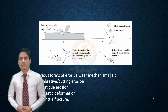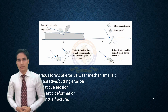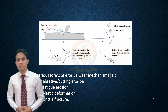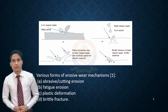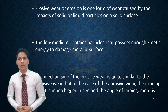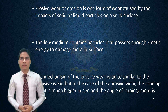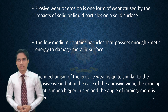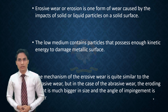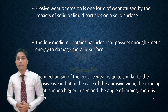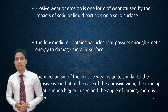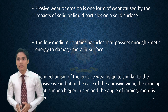This image in the slide shows various forms of erosion. Erosion is one form of wear caused by the impacts of solid or liquid particles on a solid surface. The flow medium contains particles that carry enough kinetic energy to damage the matrix surface. The mechanism of erosive wear is quite similar to abrasive wear, but in the case of abrasive wear, the eroding edge is much bigger in size and the angle of impingement is lower.